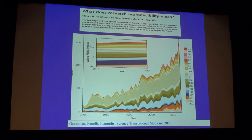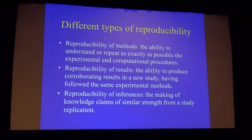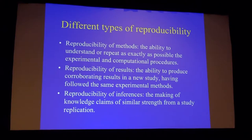So what do we mean by reproducibility? There is a lot of discussion about that, and if you look at the literature across all 22 major fields of science, there's more people talking about reproducibility in the last few years — a geometric growth of views of terms like reproducibility and reproducibility of results. But there are different types of reproducibility: reproducibility of methods, reproducibility of results, and reproducibility of inferences.